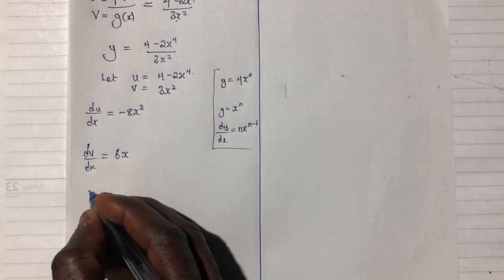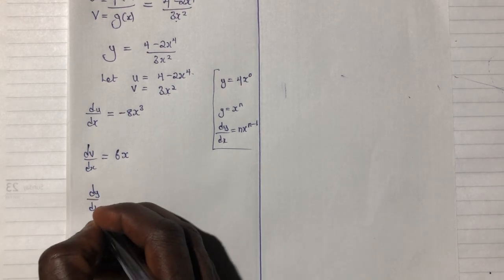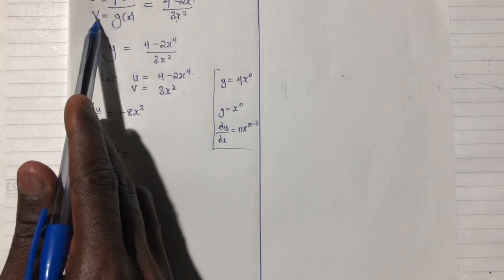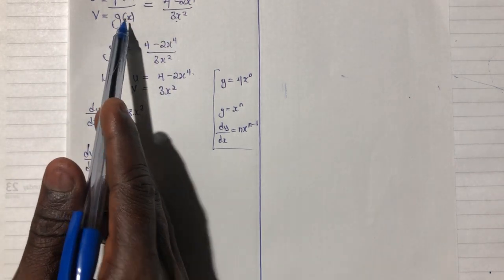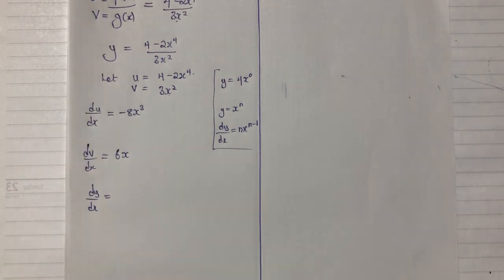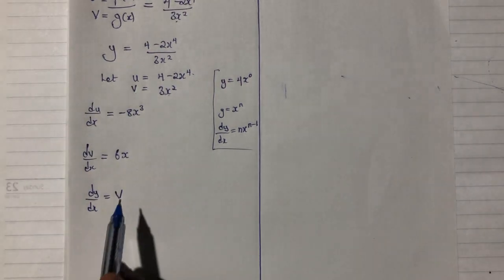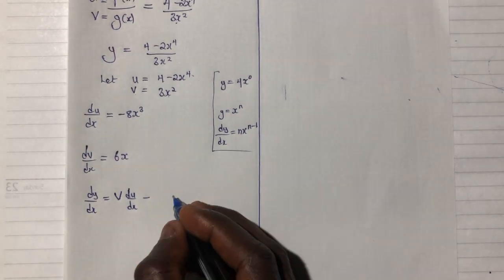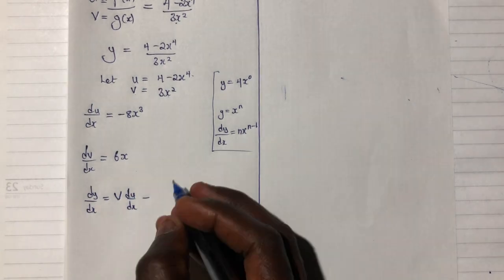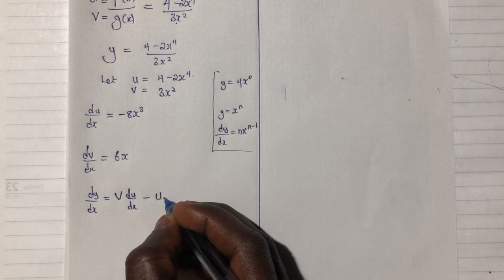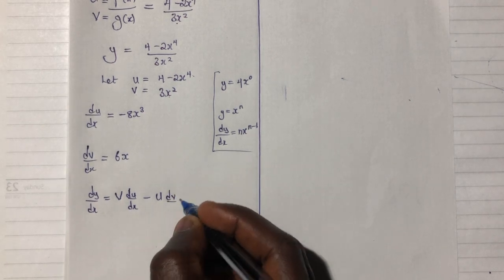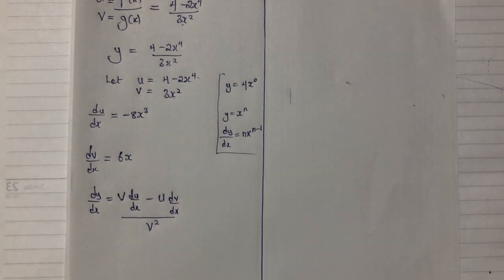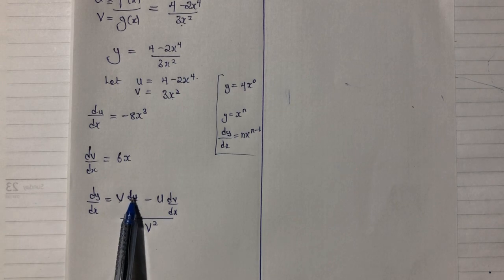From the quotient rule, the formula says: dy/dx equals v times du/dx, minus u times dv/dx, all over v squared. Remember, you always start with v — the denominator. Do not forget: start with v, take the derivative of u, subtract u times the derivative of v, and divide the result by v squared.